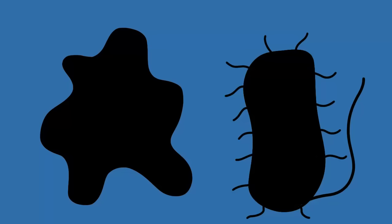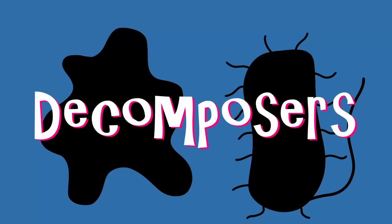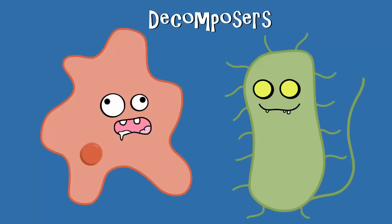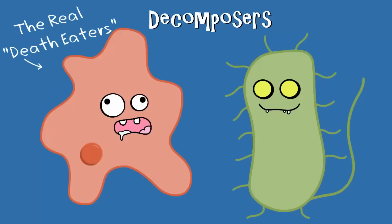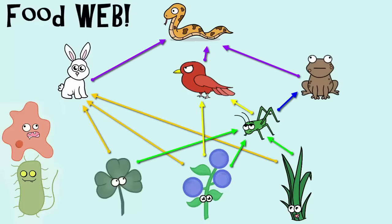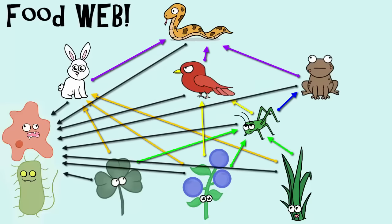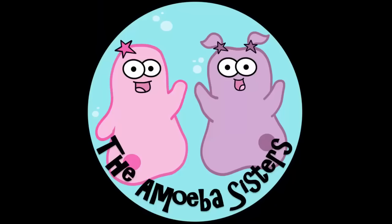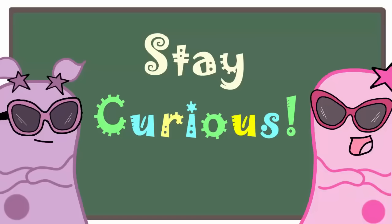One last thing. There are some organisms that we left out of our food webs and food chains, but they're kind of a big deal: decomposers. Decomposers are heterotrophs since they do eat other things, even if the things they're eating are dead. Decomposers include organisms like bacteria and fungus. Technically, if we were to draw them in, then every arrow here would eventually point to them. Well, that's it for the Amoeba Sisters, and we remind you to stay curious.